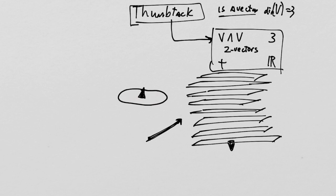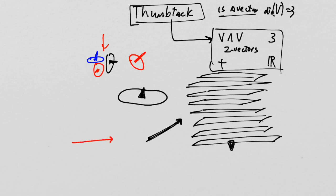These things can have more than one component, but the components always refer to densities in basis directions or lengths in basis directions. This guy is going to be a little piece of area in basis directions. So there will be three of them — little pieces of area oriented this way, this way, and coming out at us. Any thumbtack is a linear combination of those basis thumbtacks.